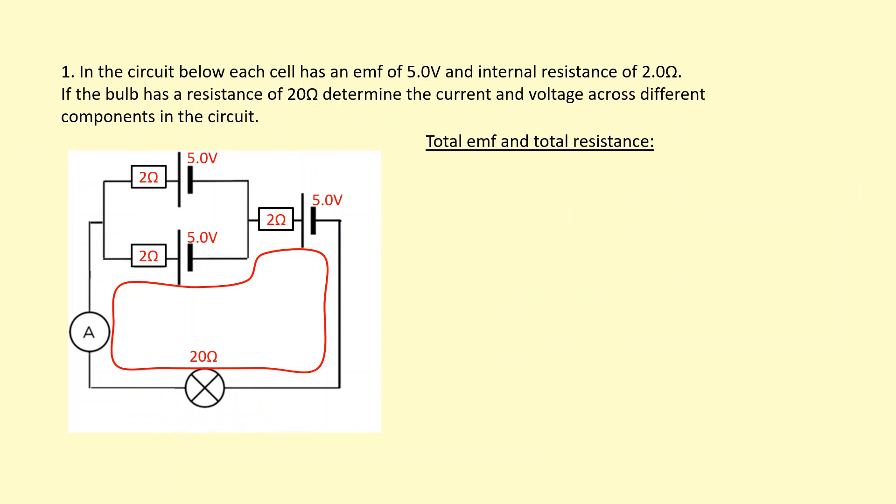Another method I could use is to figure out the total EMF and total resistance. For total EMF, think about how much energy each charge gains as it goes around the circuit. Each charge only goes through two cells: this cell and either this one or this one, but only one of them. So the total energy gain will be 10 volts.